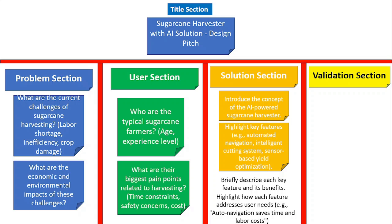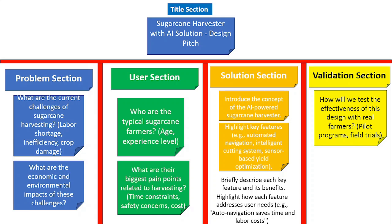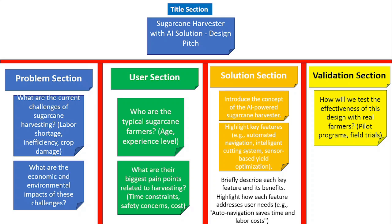Finally, present your validation results to the targeted audience — how will you test the effectiveness of this design with real farmers? Share real-time experiments and testing results, explain how you conducted pilot experiments and field trials. Propose metrics to measure success, such as efficiency gains from the sugar cane harvester, cost reduction from the newly introduced machine, and user satisfaction levels.